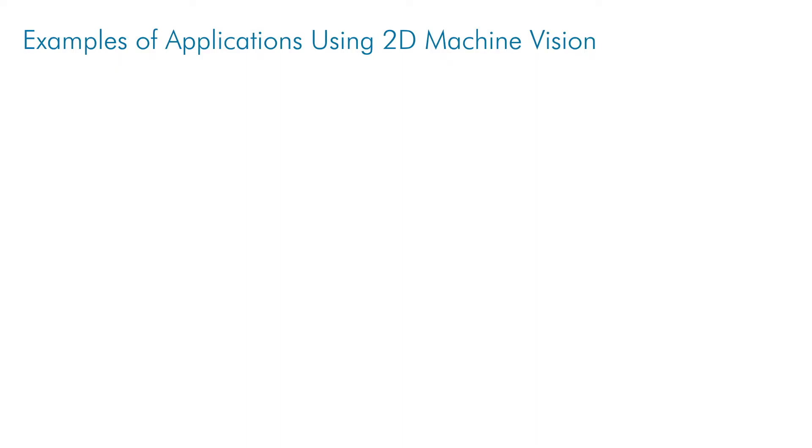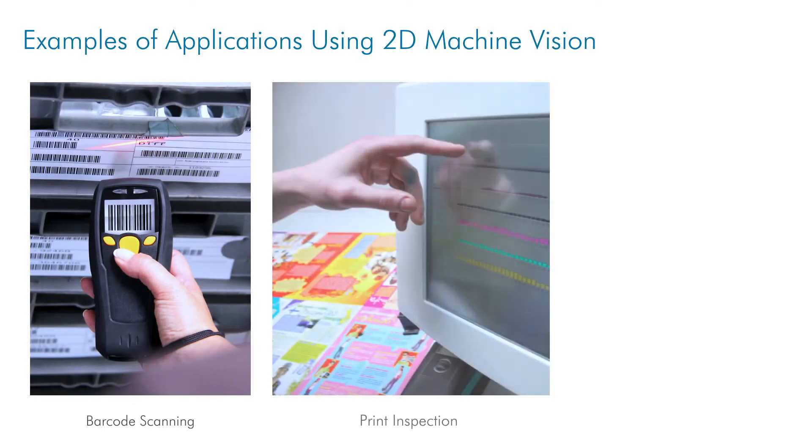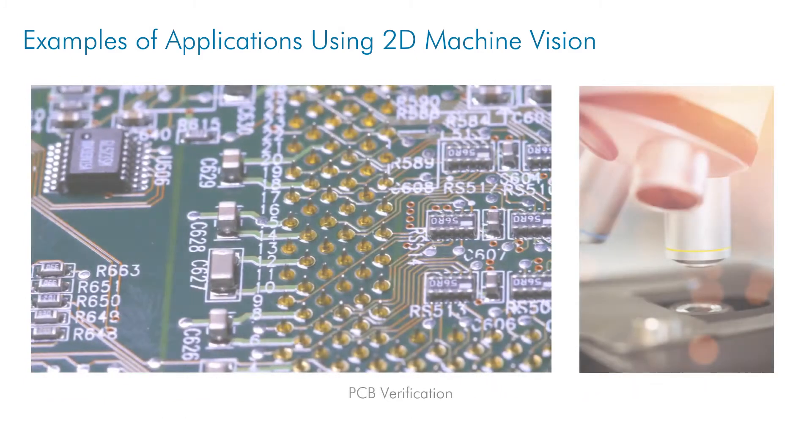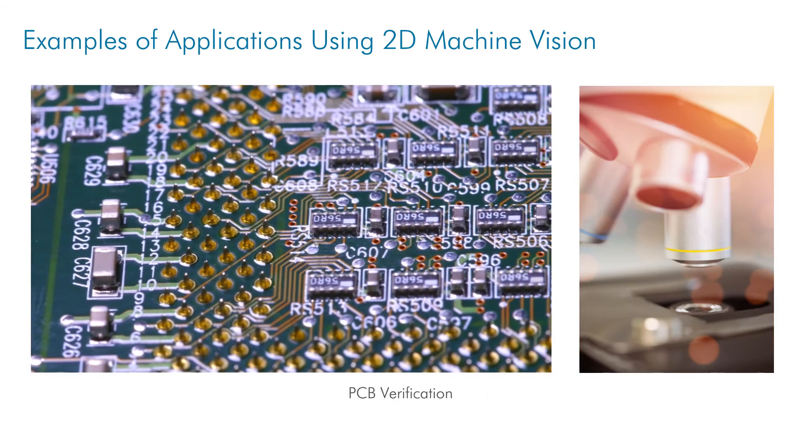Examples of just a few applications are barcode scanning, print inspection, mail sorting, PCB verification, and many more. A major way that 2D machine vision has been evolving recently is to include both hardware and software to perform many of these tasks all within a single device. These types of devices are often referred to as smart cameras.